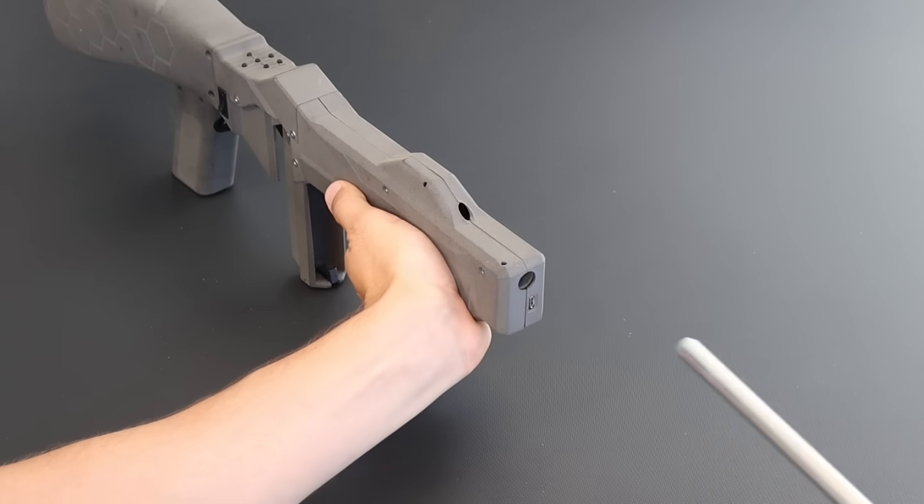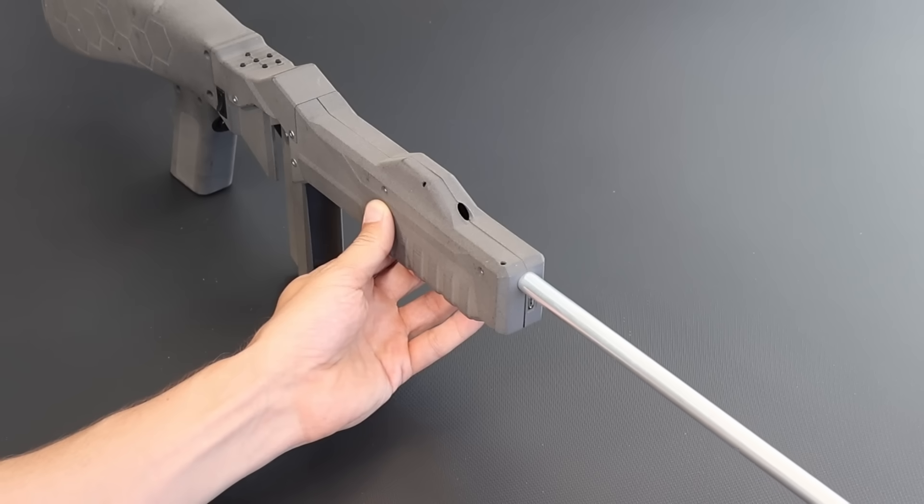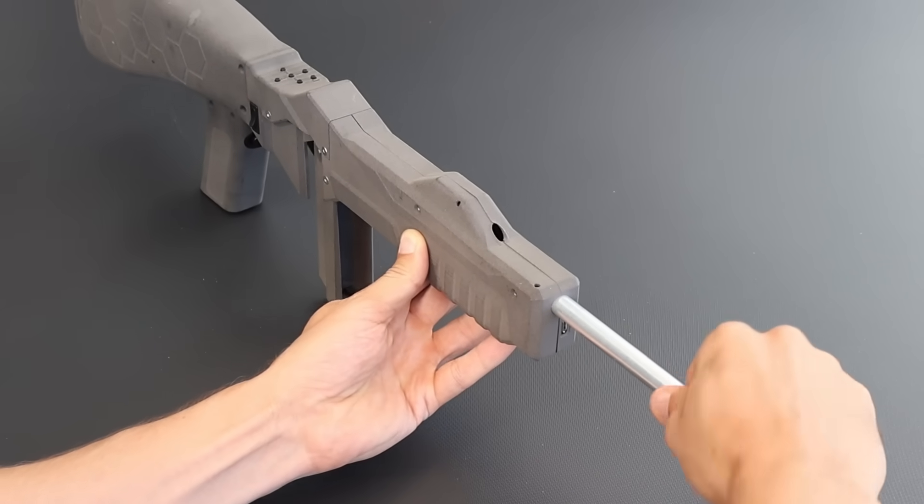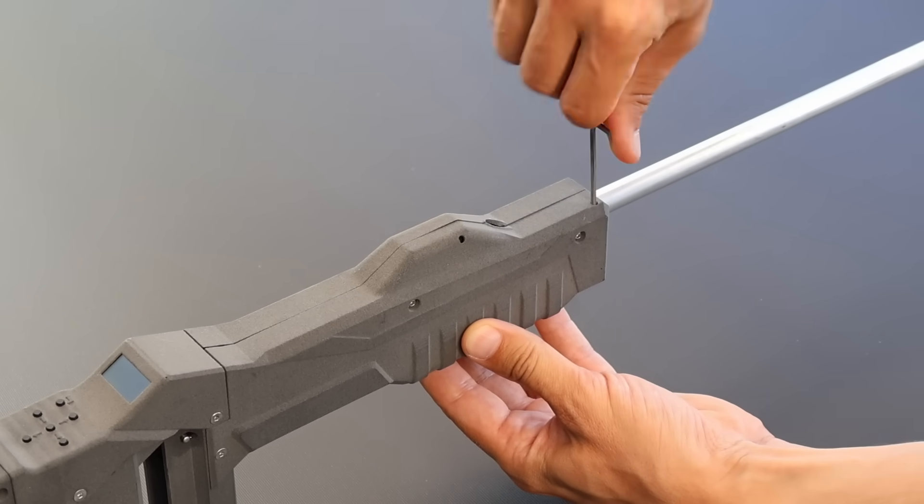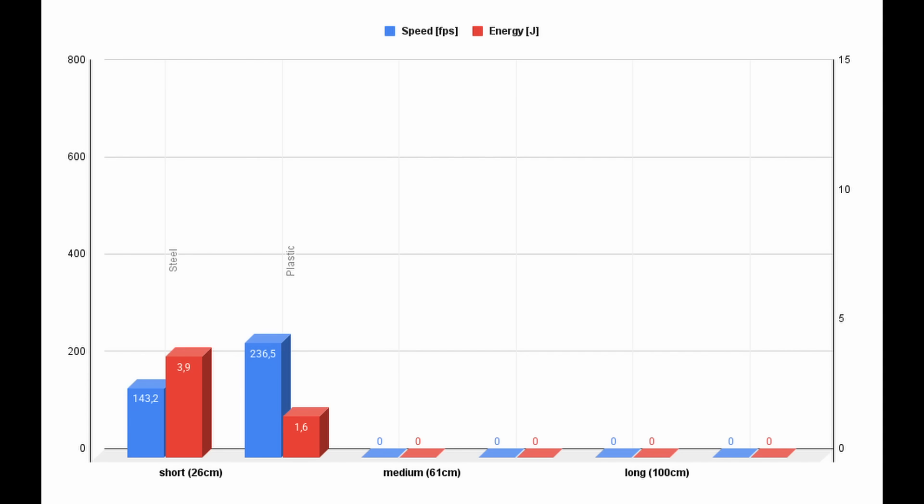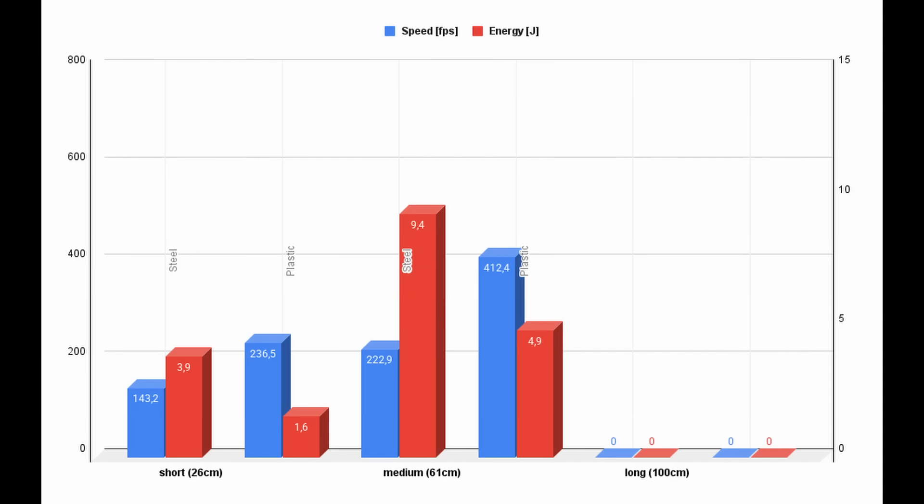The short 26cm barrel looks the best, but with a 61cm barrel, I reached 223 fps, or 9.4 joules with steel balls, and 412 fps, or 4.9 joules with plastic balls.